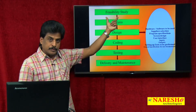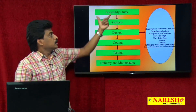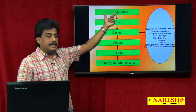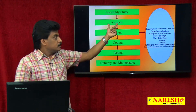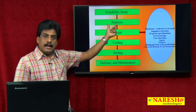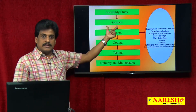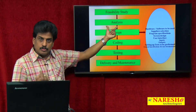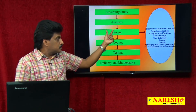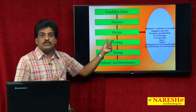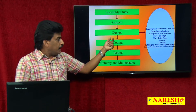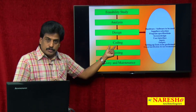Every phase has input and output. Input is client requirements, output is BDD. BDD is input to analysis, and the output is SRS — converting business requirements into technical requirements. SRS is input to the design phase, and the output is TDD — technical design document — which then becomes the input to coding.